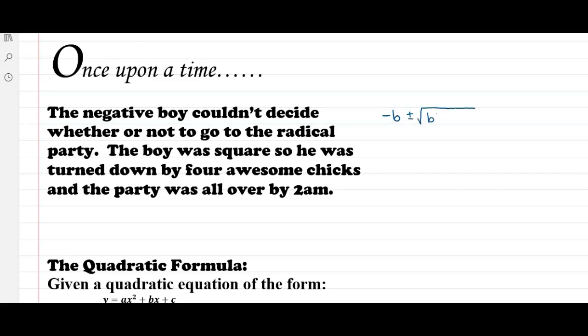The boy was square and was turned down by four awesome chicks. And the party was all over by 2am. That is our quadratic formula.